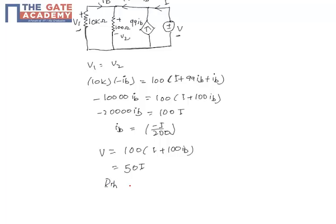So Thevenin's resistance will be equal to V by I. It is equal to 50 I by I, which equals 50 ohms. So Thevenin's impedance here is equal to 50 ohms. So the correct option is A.